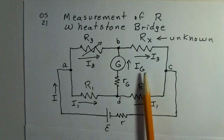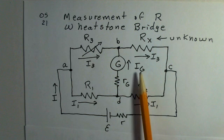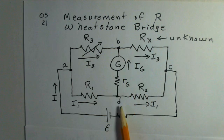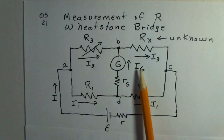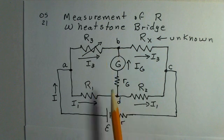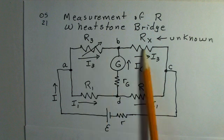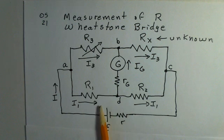When that is true, when the current here is 0, that tells us the potential at point B is the same as potential at point D. That's the purpose of our galvanometer, to show us when we balance the potentials on the two sides of the Wheatstone bridge.